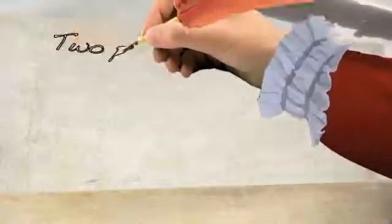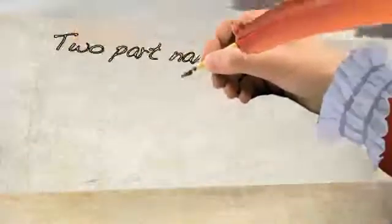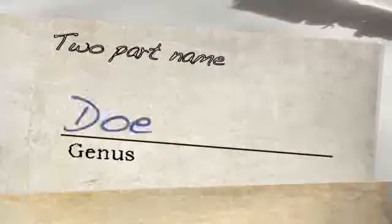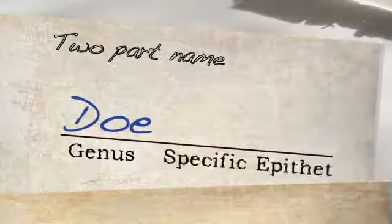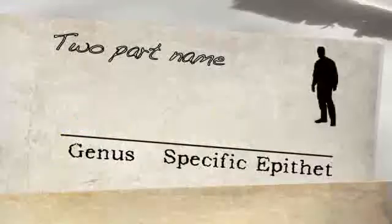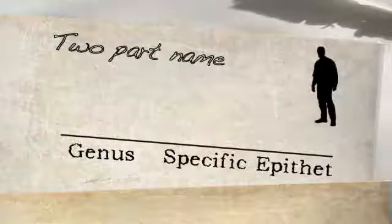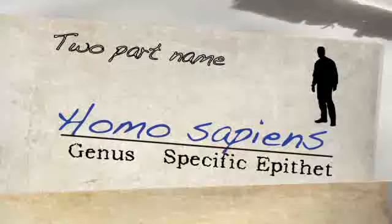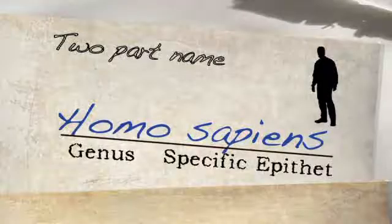He decided that every species should have a two-part name. The first part would be the genus, kind of like your last name. And the second part, the specific epithet, is kind of like your first name. For example, the scientific name of humans is Homo sapiens. Latin is the language of systematics, so every name has to be Latinized.